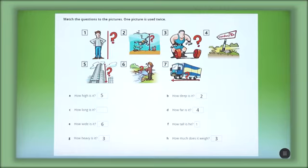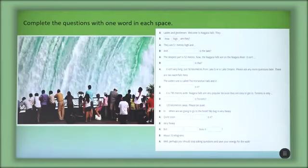Now look at the picture and complete the question with one word in each space. We talked about all the adjectives of dimensions, so now we are ready to complete the gaps. Starting from the beginning: Ladies and gentlemen, welcome to Niagara Falls. How high are they? They are 51 meters high.